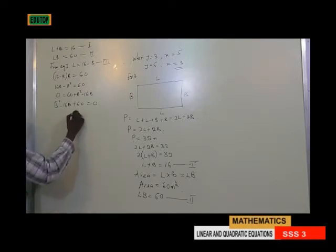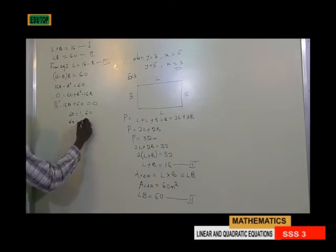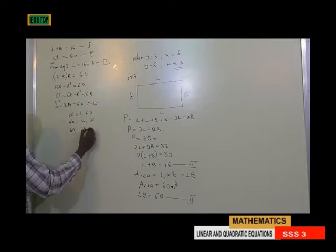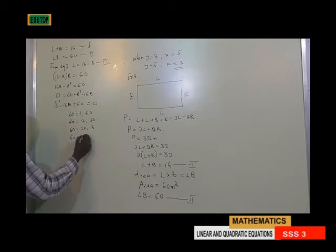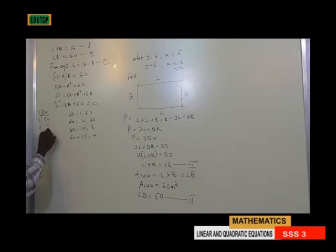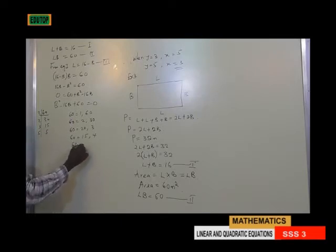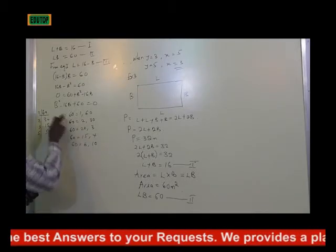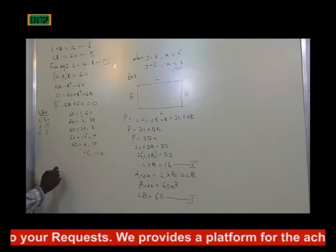The factors of 60 include: 1 and 60, 2 and 30, 20 and 3, 15 and 4, and also 10 and 6. So minus 6 and minus 10 will be suitable here because their product gives 60 and their sum gives minus 16. That is the pair we have to apply.